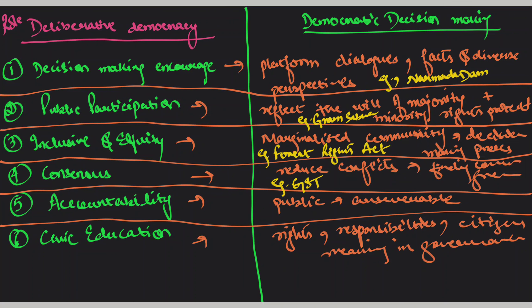Accountability के लिए: सरकार जो भी power में है, वो public को accountable है। इस तरीके का mechanism बनाना जिससे decisions track हो पाएं। इसीलिए RTI — Right to Information Act — लाया गया था, जिसमें citizens को empower किया गया कि वो accountability demand करें public officials से, और welfare schemes का allocation कैसे किया जा रहा है उसे influence कर पाएं। Civic education के लिए: electoral literacy campaigns जो election commission चलाती है, जिसमें voters को voting system और participatory democracy का importance समझाया जाता है।